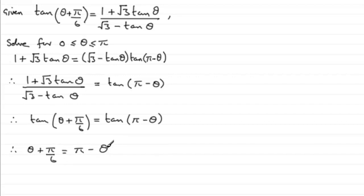And you can see that if I add theta to both sides, I therefore have two theta. And if I take pi upon 6 from both sides, I get pi minus pi upon 6.